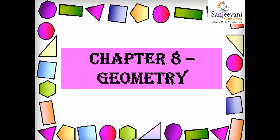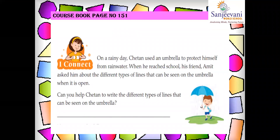Chapter number 8, Geometry. The first page we are going to see is page 151 of your course book — the I-Connect. There is a short scenario given: on a rainy day, Chetan used an umbrella to protect himself from rainwater. When he reached school, his friend Amit asked him about different types of lines that can be seen on the umbrella when it is open. Can you help Chetan write the different types of lines that can be seen on the umbrella?